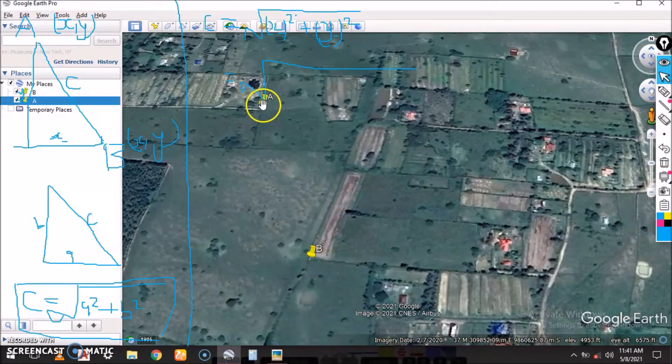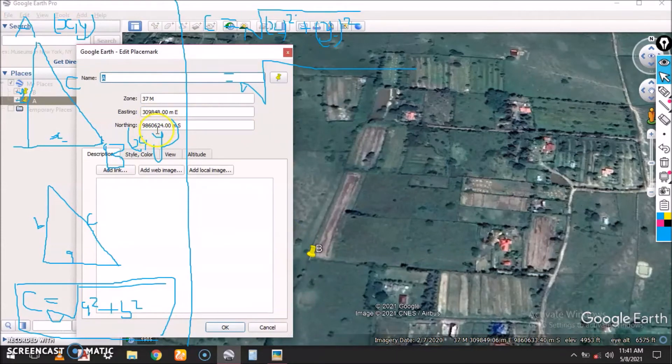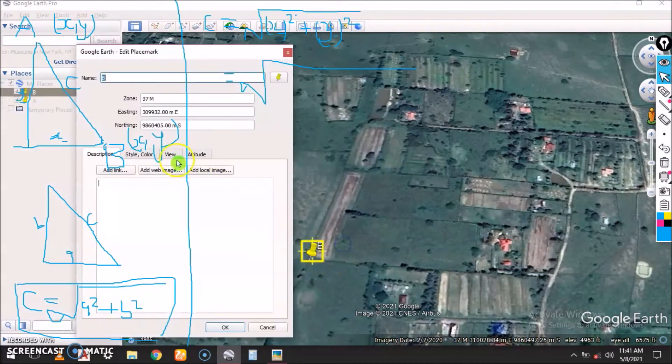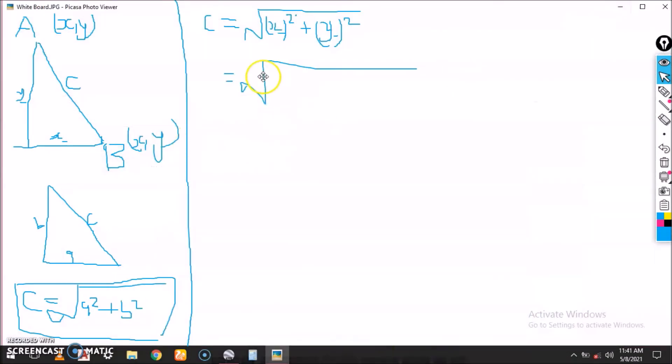We have C as change in x. We have our points from Google Earth. Change in x is x in A minus x in B. This is what we are having, change in x, that is 309848 minus 309932 squared.